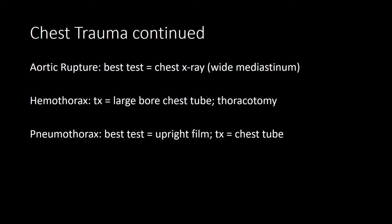Cardiac tamponade is high yield. Remember Beck's triad: jugular venous distension, hypotension, and muffled heart sounds. You'll see pulsus paradoxus — a drop in systolic blood pressure greater than 10 mmHg with inspiration. EKG findings include electrical alternans with alternating QRS directions. Diagnose cardiac tamponade with ultrasound, and treat with a fluid bolus and pericardiocentesis.